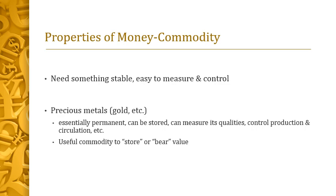Historically, precious metals have been the ideal money commodity — in particular gold, but also silver. Gold is essentially permanent: you can store it for decades or centuries without degradation. You can measure its weight and purity, and control its production and circulation. All other commodities' exchange value becomes expressed in a certain weight of gold, which bears that exchange value.